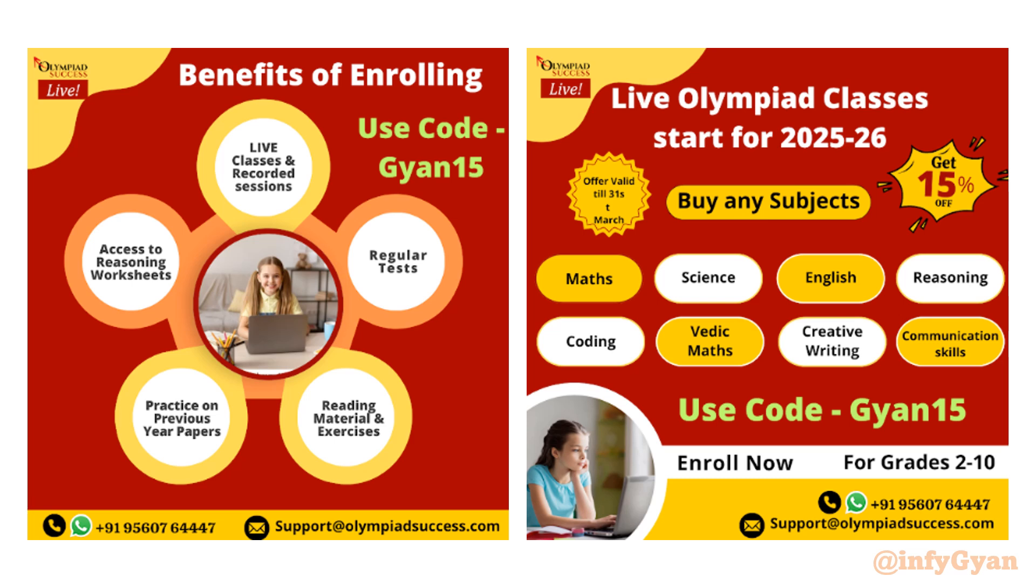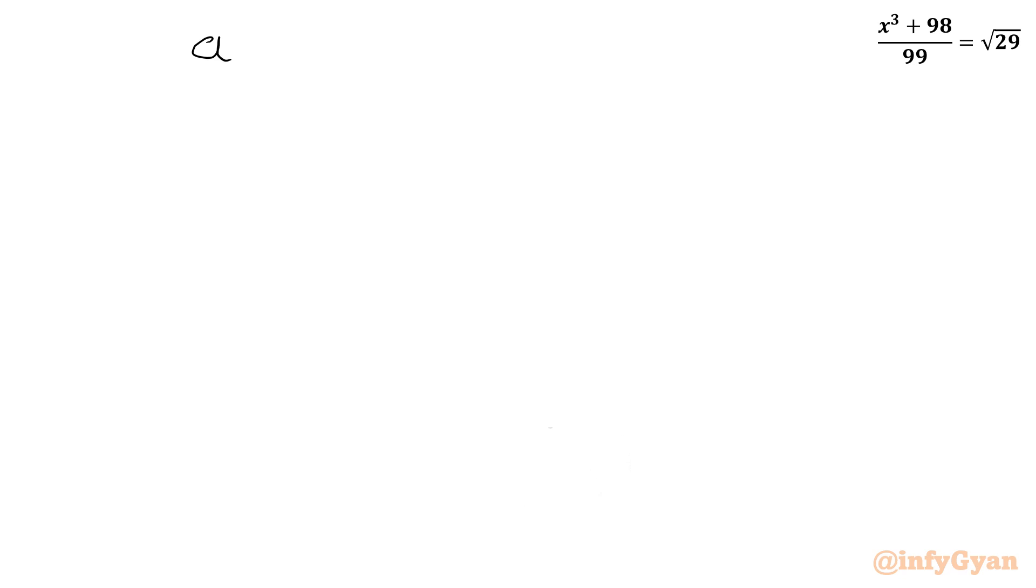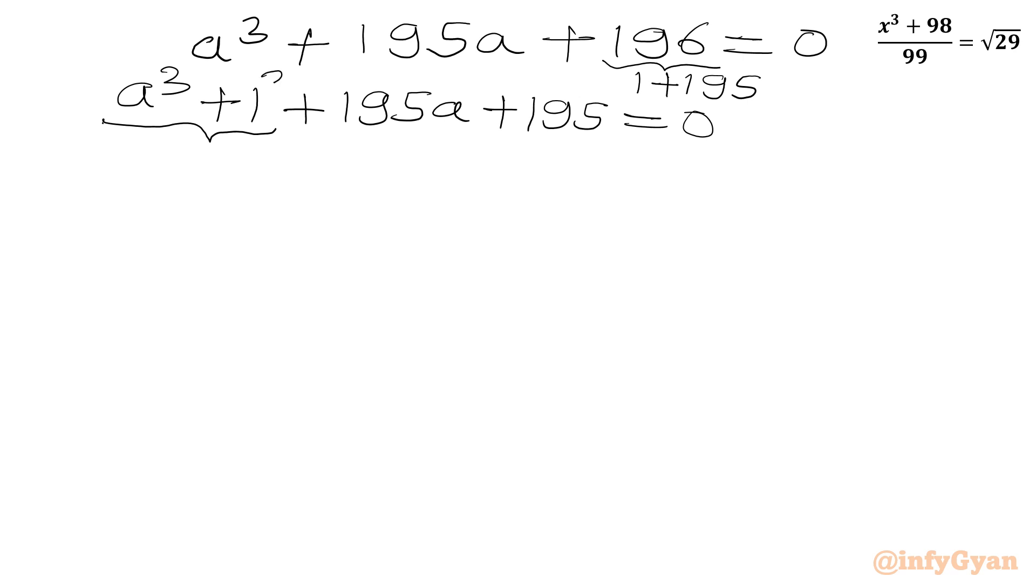Let us come back to our problem. So I will write our equation: a cubed plus 195a plus 196 equals 0. Now I can split 196 as 1 plus 195. So a cubed plus 1 plus 195a plus 195 equals 0.